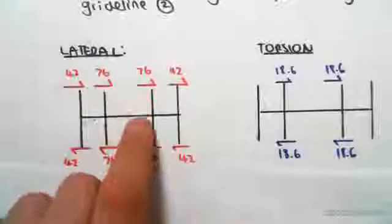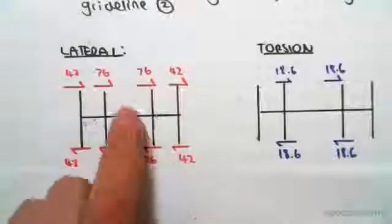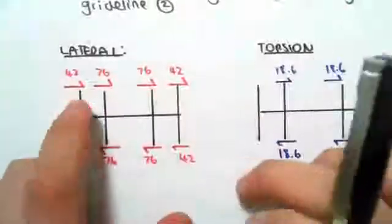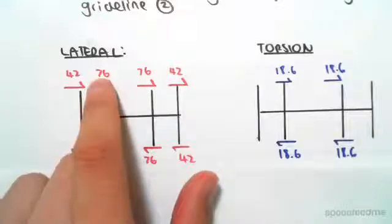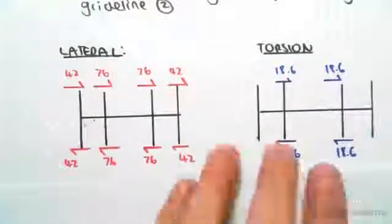We had a diagram like this, a section like this with 76, 76, 76, 76, 42, and 42s on the end. That was the shear from the lateral loading. From the torsion in the previous video we just found to be 18.6 and 18.6.